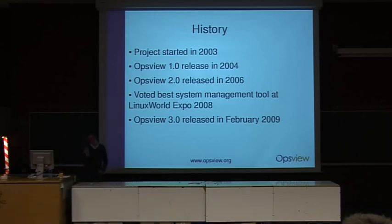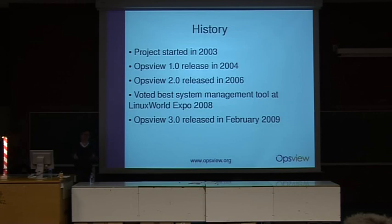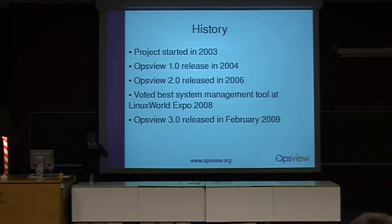So, a bit of history. The project was started in 2003, and it really came out of working with Nagios and doing some projects around it. The people we were doing the project for were saying Nagios is great, but it would be excellent if it could do these extra things, and maybe it'd be nice to have a web UI to actually configure and manage the system. That's what really started the OpsView project. It was initially just a bunch of bolt-ons to Nagios, but quite soon it became a more integrated framework. It isn't just add-ons to Nagios — it actually is quite a large amount of code now.